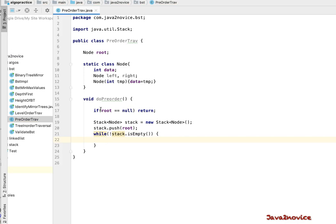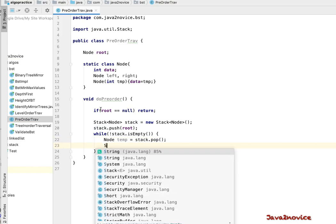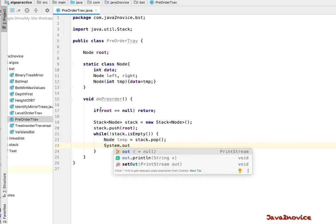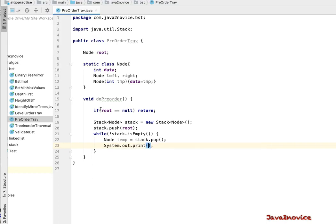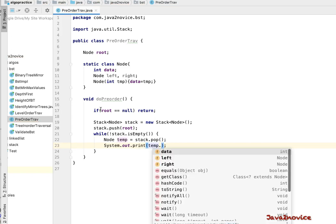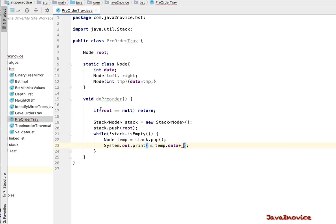So now first pop out an element and capture it through a temporary node reference. Now print the data from the popped out element: temp.data. Since we're going to display the entire tree data in a single line, space will be a delimiter here.